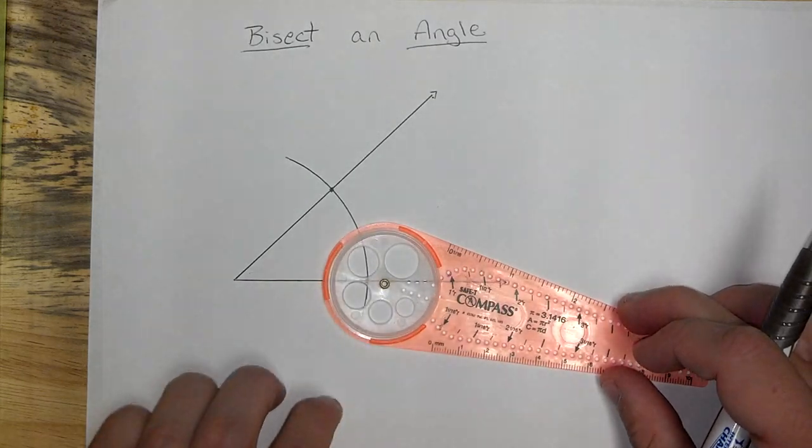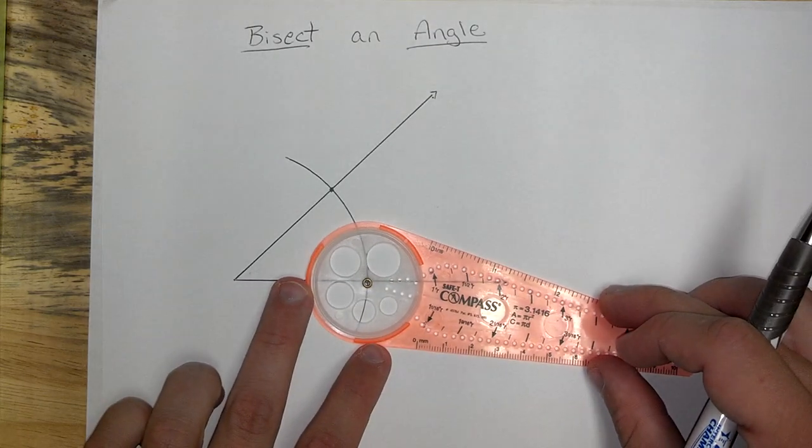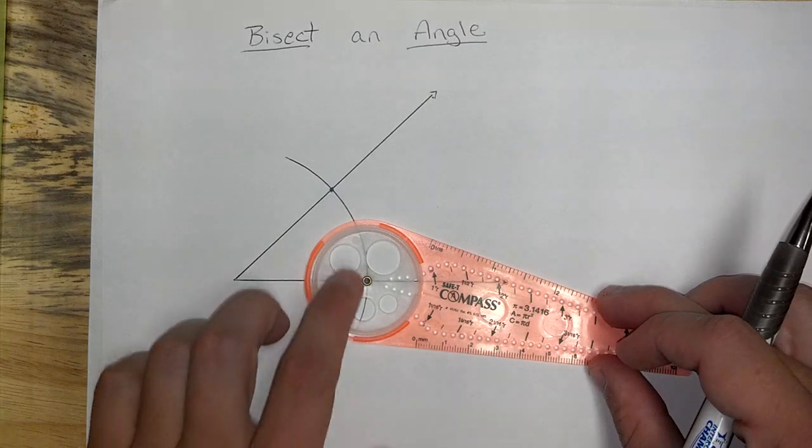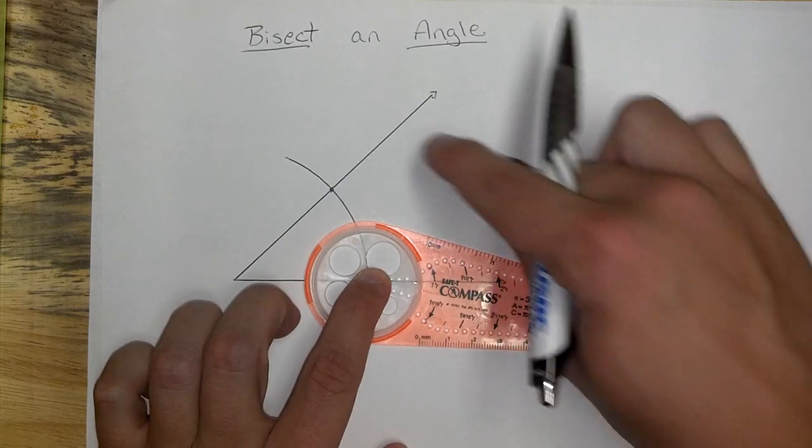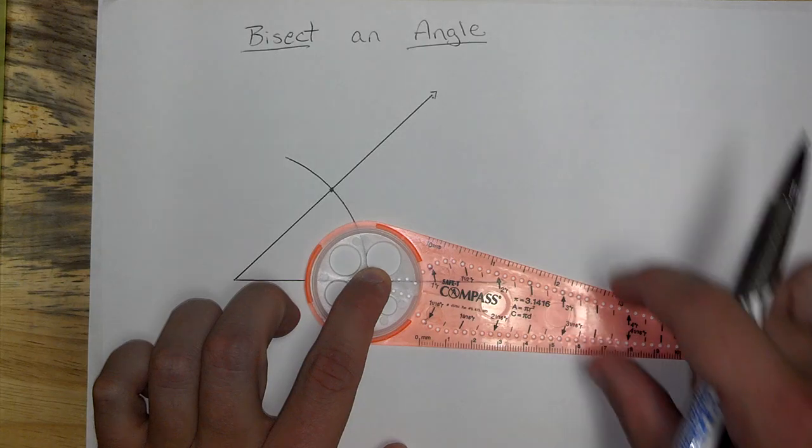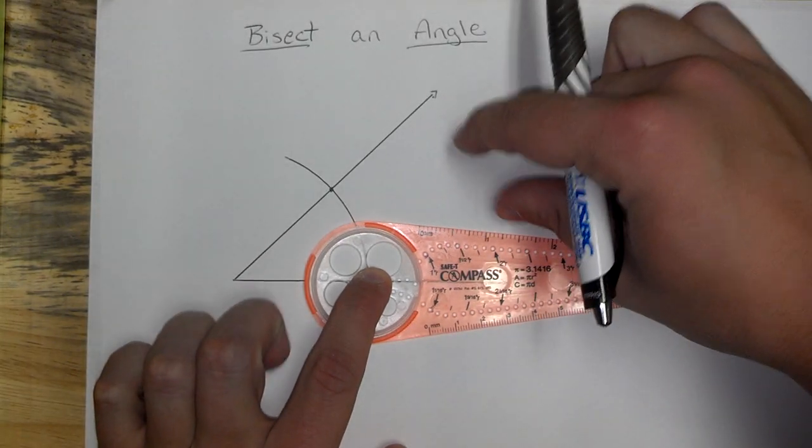Okay, so let's line up the little brass ring on our compass with one of those endpoints. And then create an arc out here in the middle. Make sure that it's big enough that it's actually going to be in the middle.